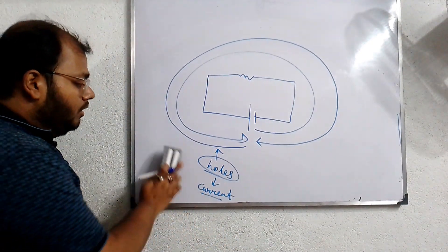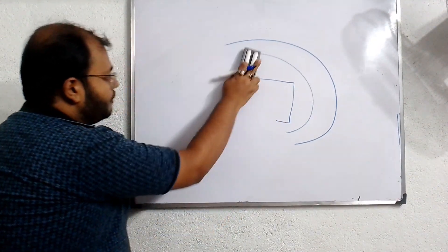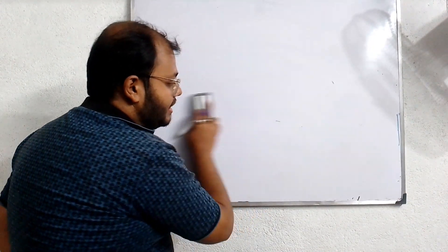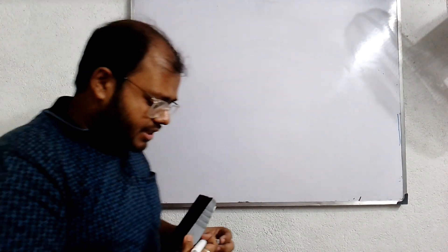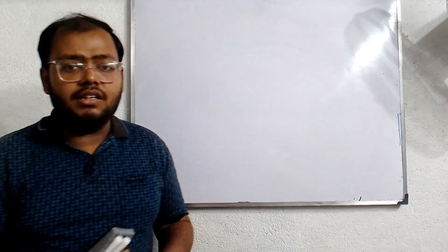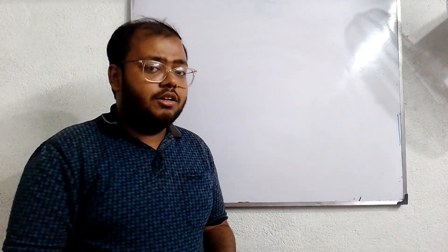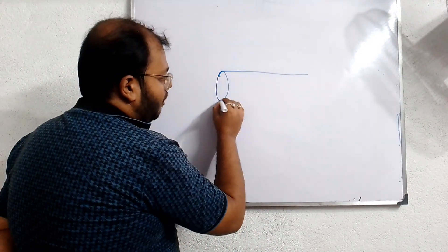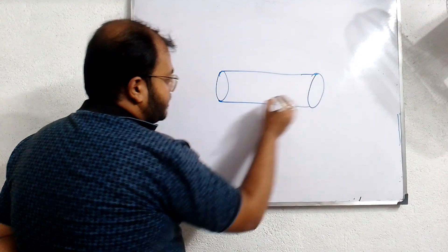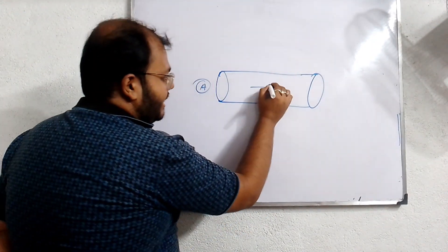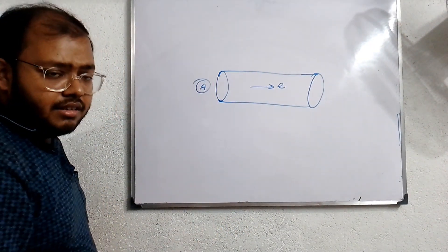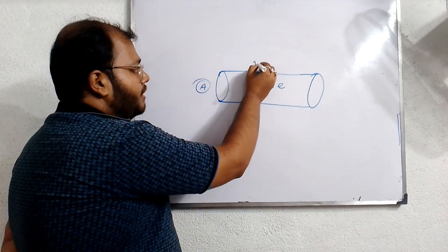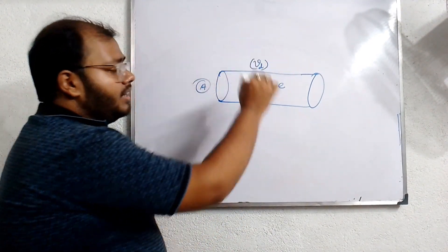Current flow will be called as the flow of free electrons. Now the flow of free electrons has a definite velocity. The velocity of free electrons is called drift velocity. Now we have to relate drift velocity and current flow. Let's take a conducting wire having cross-sectional area A. The free electrons are moving through it. The drift velocity of electrons is Vd.